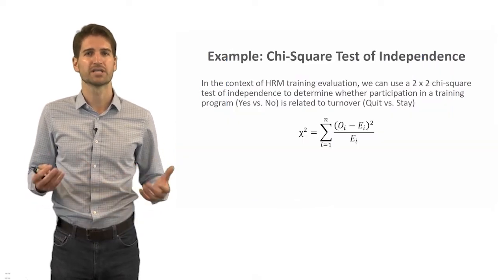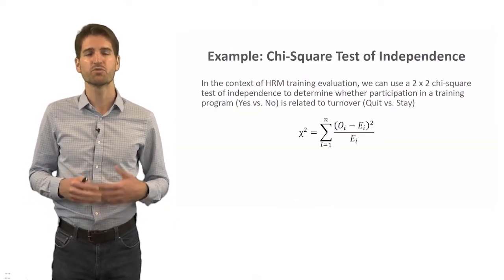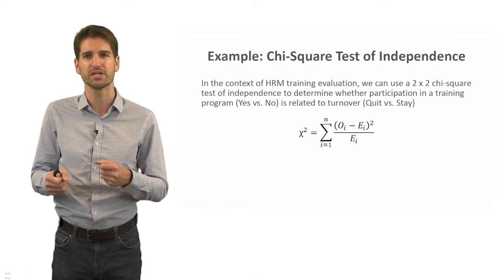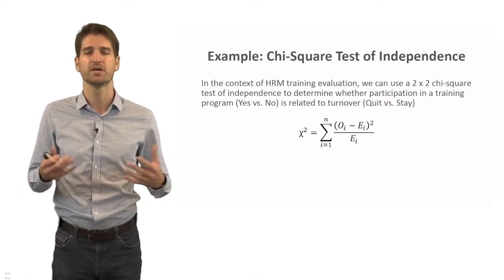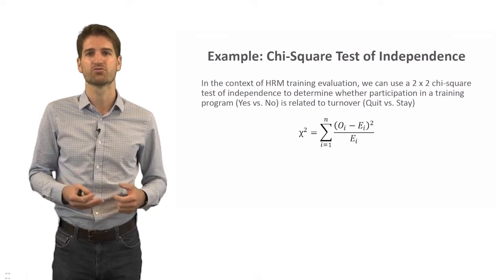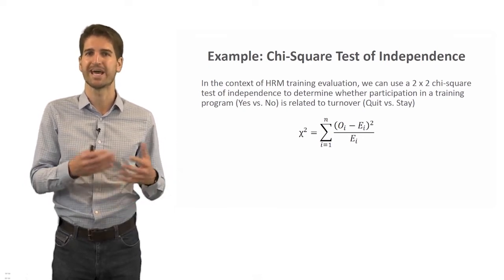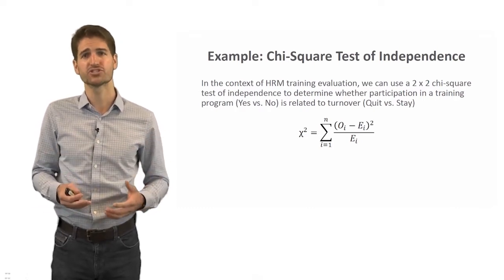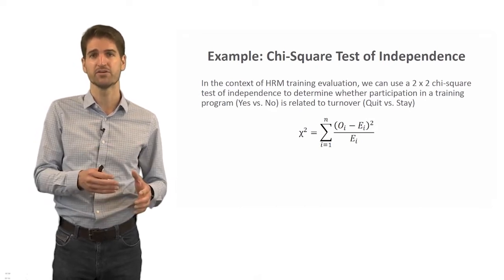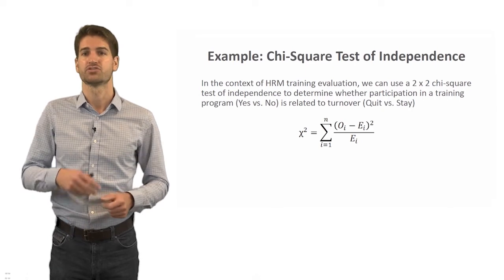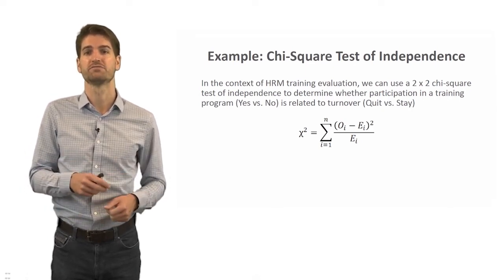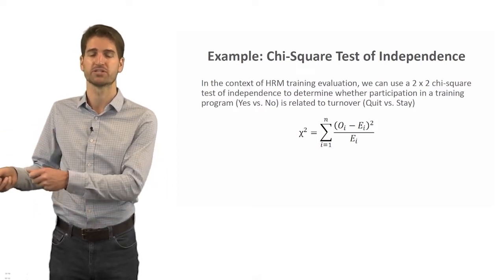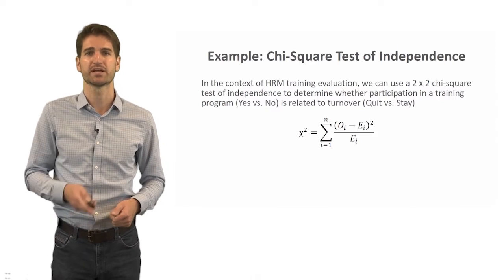So how do we actually calculate a chi-square test of independence? It's an intuitive and simple calculation. Using the Greek notation for chi-square — that X shape with a superscript 2 — for each cell, we take the observed data value minus the expected data value, square that difference, divide by the expected data value, and then sum those quantities across all cells.